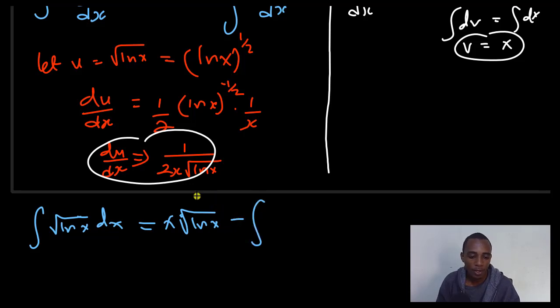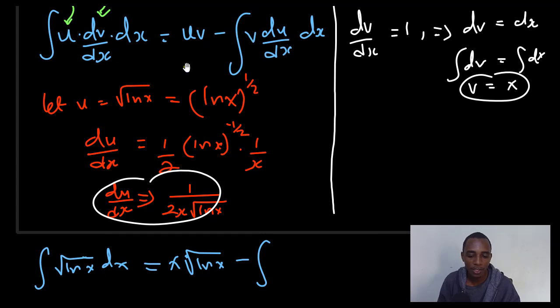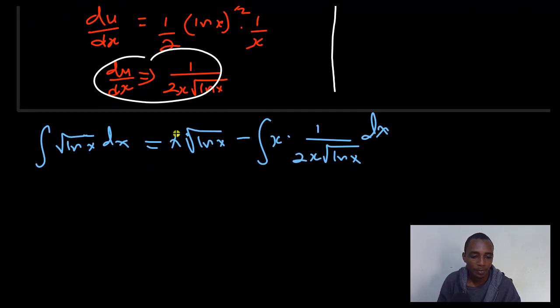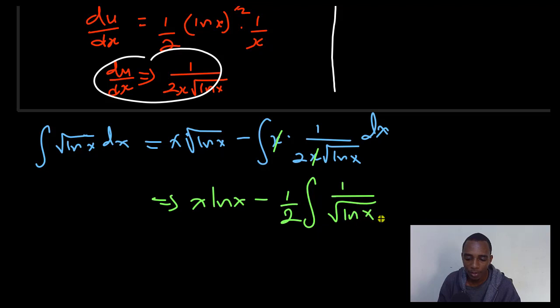Minus the integral of what we have here, v du dx. Our value of v is x, and our value of du dx is 1 over 2x square root of ln x dx. We can clean this up a little. That's going to be x times ln x minus, this cancels with this, just have a half here times the integral of 1 over the square root of ln x dx.